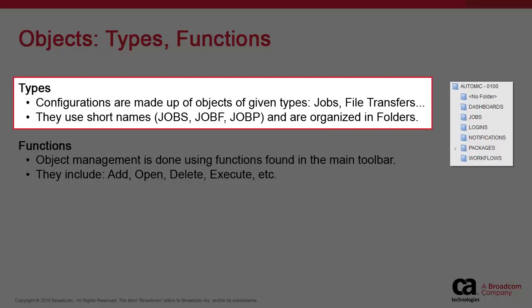One of the core principles of Atomic Automation is object-oriented design, which greatly simplifies the repurposing of assets. Object types use short names like JobS, JobP, and JCH, and we strongly recommend organizing your objects in a dedicated folder for each type.